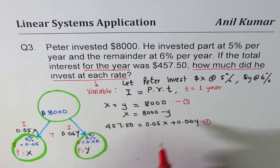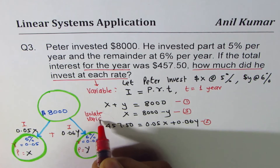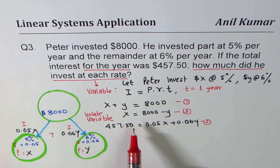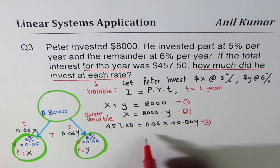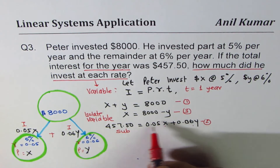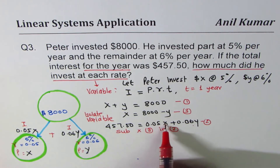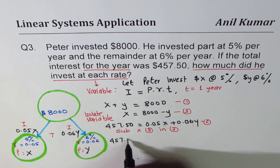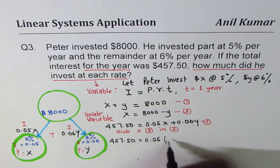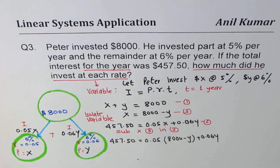We want to eliminate one variable by substitution. We substitute the value of x from equation three into equation two, replacing x with (8,000 − y). The equation becomes: 457.50 = 0.05(8,000 − y) + 0.06y. Now we have one equation in one variable, y.